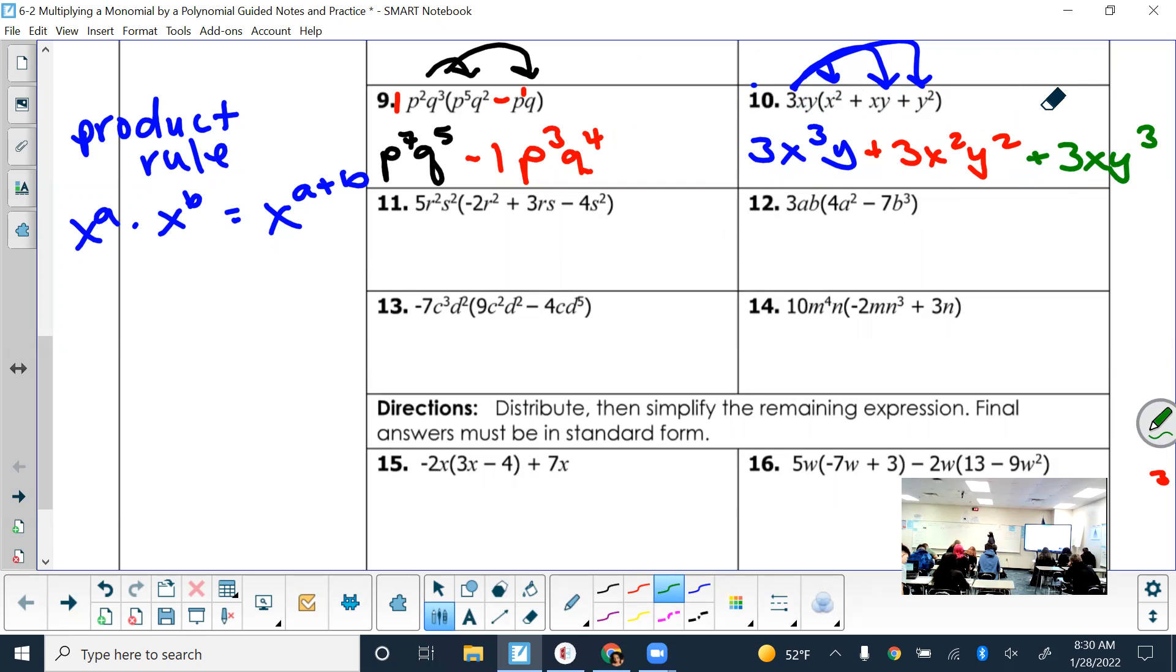So then look at your answer. See if there's any like terms that we need to combine. There isn't. And then make sure that it's written in standard form. So that's good practice for your test. It's a good chunk of points based on can you write your final answer in standard form. Is it in standard form? Yes. It's in ABC order with a higher value exponent first. So like x cubed, x squared, x to the first. So we're good.